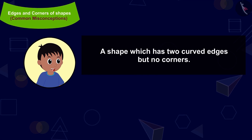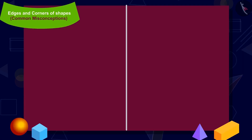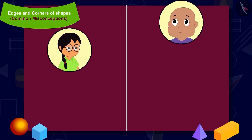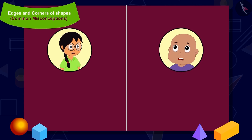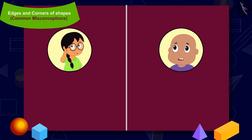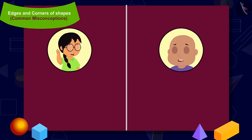Raju's next question is: make a shape which has two curved edges but no corners. Minu and Bablu start thinking. Children, can you make such a shape?